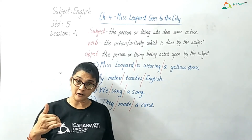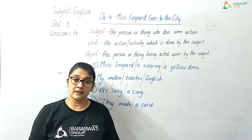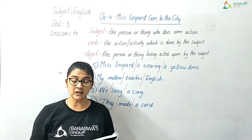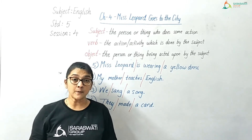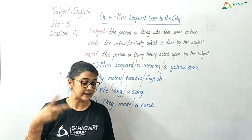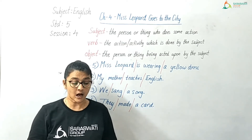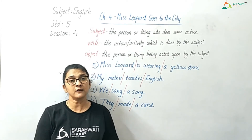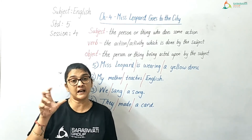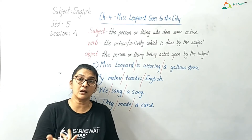Now let us go to the later part of page number 41 — Exercise C2. There we are studying the types of sentences. In types of sentences, there are four types given: declarative sentence, imperative sentence, interrogative sentence, and exclamatory sentence. In a declarative sentence, how do we identify it? A declarative sentence is one that makes a statement — it ends with a full stop. It gives us information and declares something.